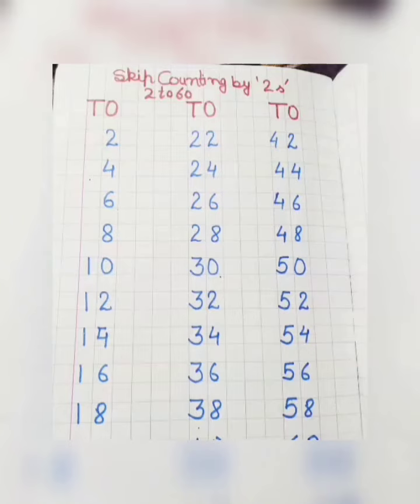To aapko 2 to 60 tak skip counting bol bol ke karna hai. Jab aap bolenge to aapko apne aap likhna hai ga. Thik hai, aapko bhi ek ek jaise kangaroo jump kar raha tha, ek number ko skip kar raha tha, aise hi aapko ek number skip karke number bolna hai. Thik hai bachyo, so do this work neat and clean. Bye bachyo, we'll be right back.